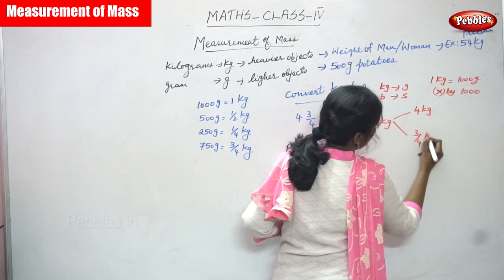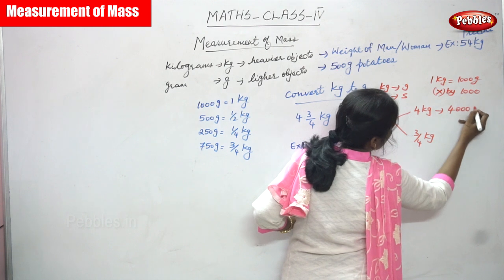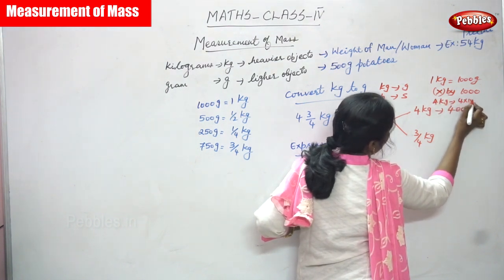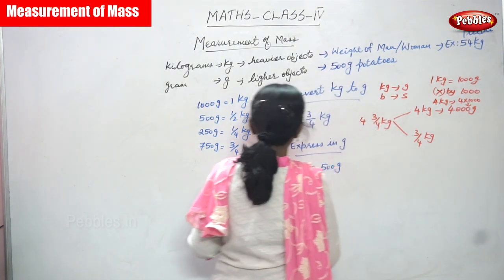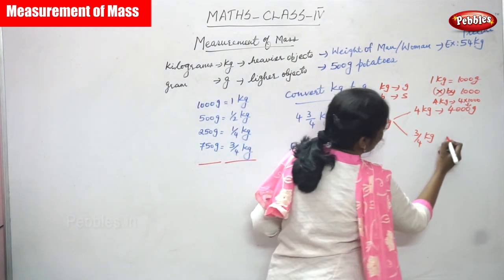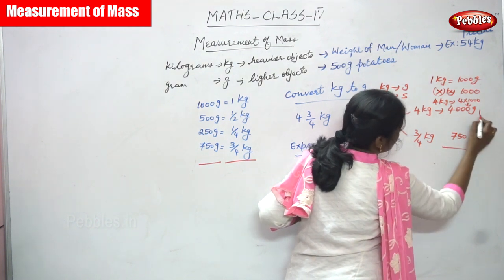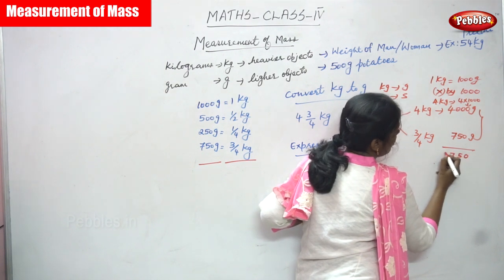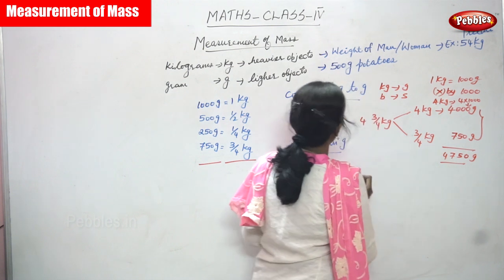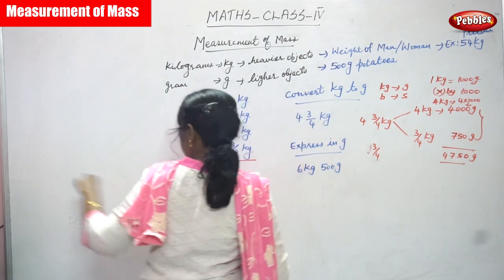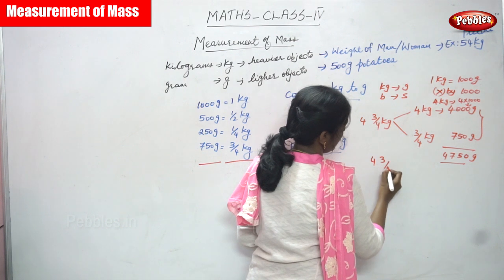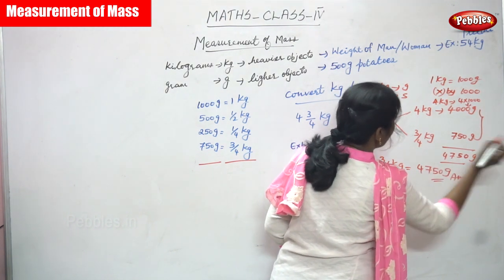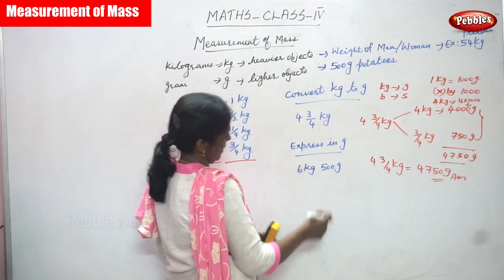Four kilograms converted into grams: 4 × 1000 = 4000 grams. Then ¾ kilogram — from the formula, that equals 750 grams. Now both are in the same unit, so you add them together: 4000 + 750 = 4750 grams. Therefore, 4¾ kilograms converted into 4750 grams is the right answer.